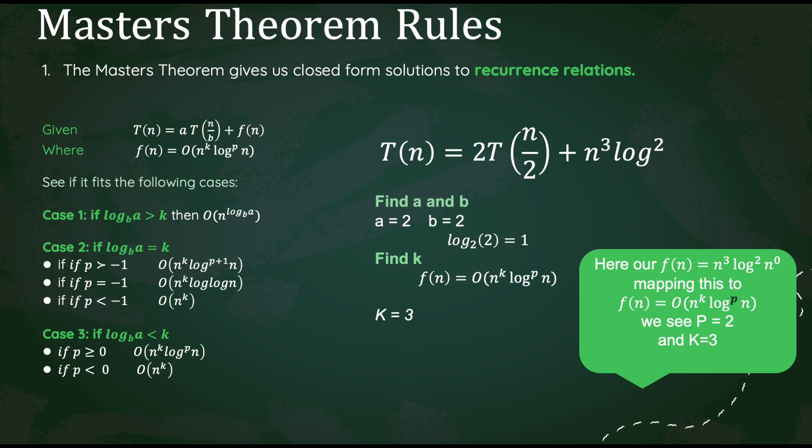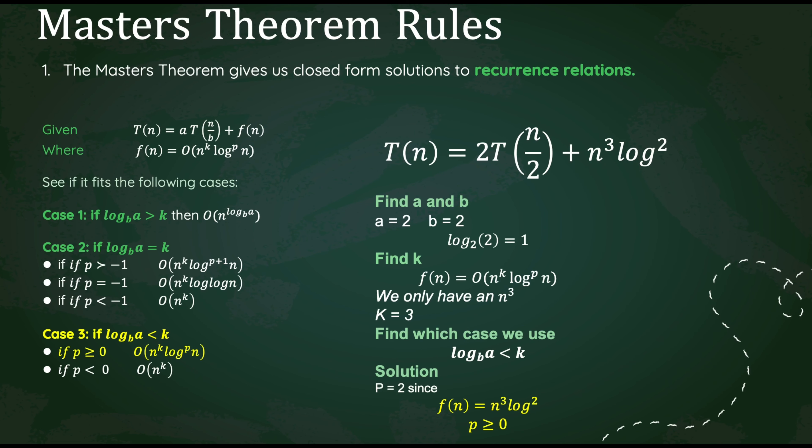Let's find our case. Comparing the two, we see log base b of a is less than k. That means we fall in case 3. Now in case 3, we've already identified our p as 2. That means we fall in the first subcase. 2 is greater than or equal to 0. Making our solution, theta of n cubed log squared n.